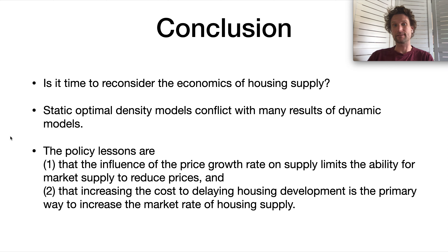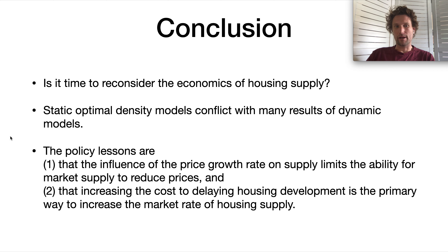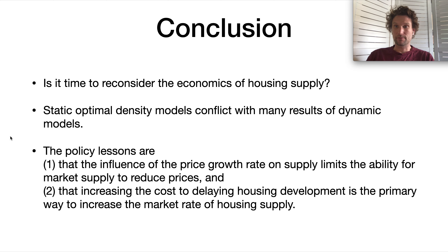So let's wrap up. Is it time to reconsider the economics of housing supply? I say yes. Static optimal density models conflict with the results of dynamic models, and the logic of the dynamic model is even more economically grounded. We should really think about increasing the cost of delaying housing supply — capitalizing on this intertemporal margin to make developing later more costly than developing today. That's how you can manipulate the private market to deliver more housing supply. Thanks for listening. I'll put a link to my paper in the comments and I'll see you with my next video.